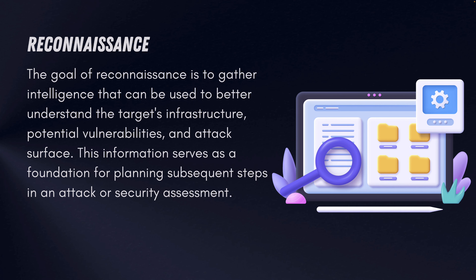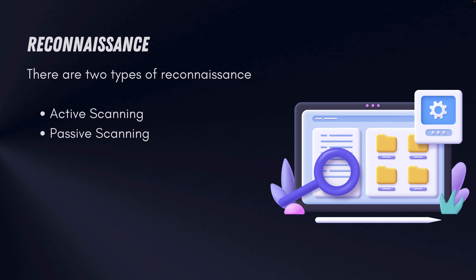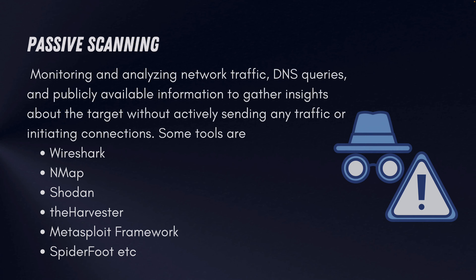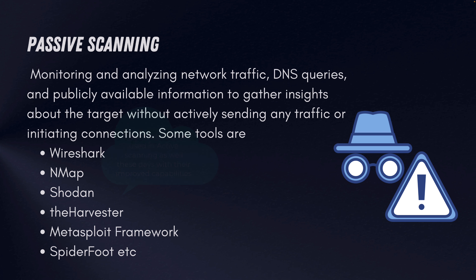Reconnaissance can be done in two ways: active scanning and passive scanning. Passive scanning involves monitoring and analyzing network traffic, DNS queries, and publicly available information to gather insights about the target without actively sending traffic or initiating connections on the actual system. Some tools available for passive scanning are Wireshark, Nmap, Shodan, theHarvester, Metasploit Framework, and SpiderFoot.